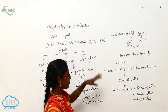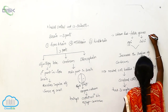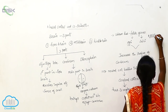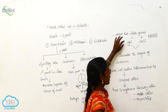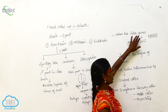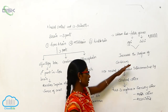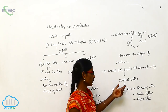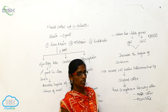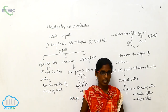The cerebrum has folds and grooves. The folds are called gyri and the grooves are called sulci. The gyri and sulci increase the surface of the cerebrum. Neural cell bodies are interconnected by the cerebral cortex, which has three regions: the sensory cortex, motor cortex, and associated cortex.